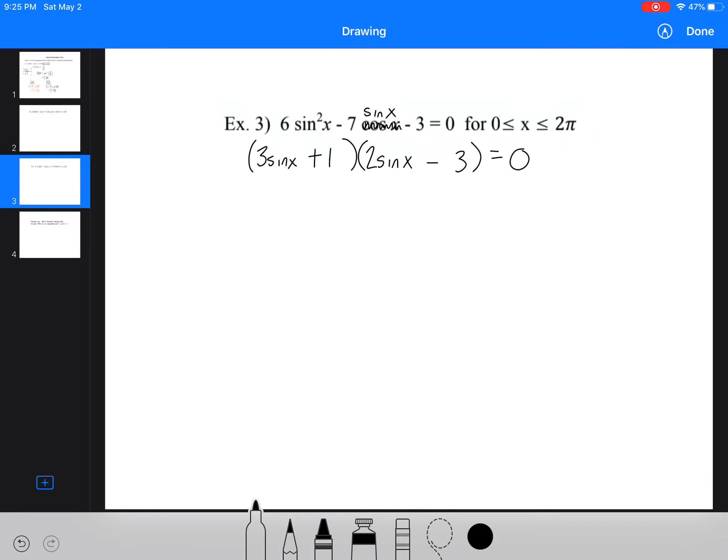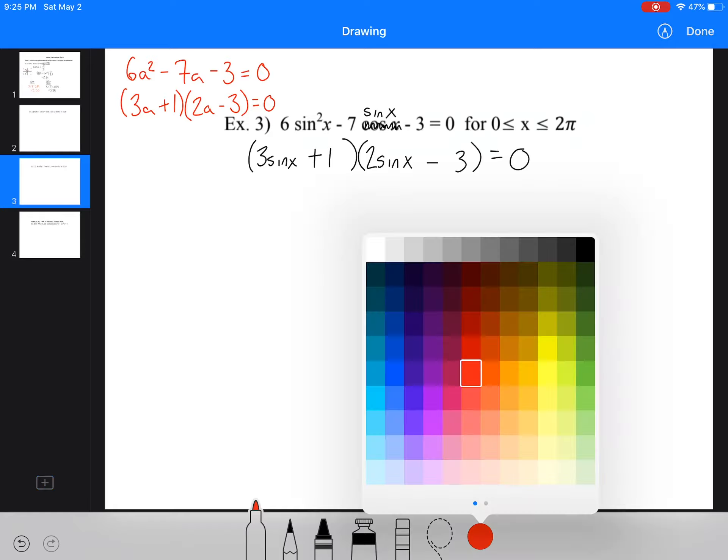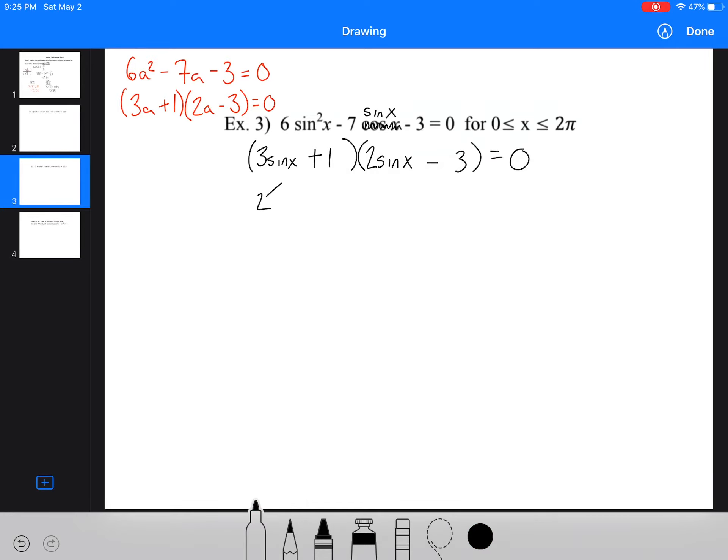This was a hard trinomial. Now what I did, and I'm going to just show you really quickly, what I did in my head is I treated this as something like this. 6a squared minus 7a minus 3 equals 0. And then I factored that. 3a plus 1, and 2a minus 3. And then my a's were just sine x's. So now we're going to have again some more solutions.